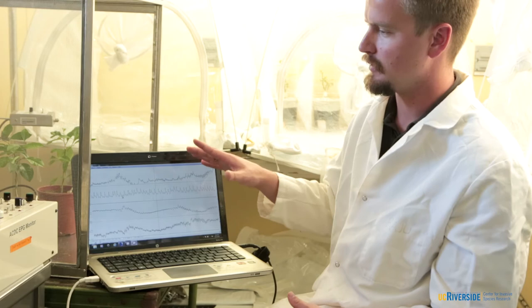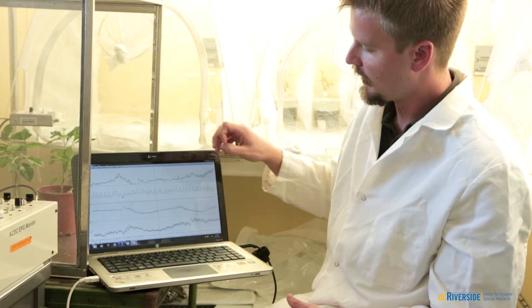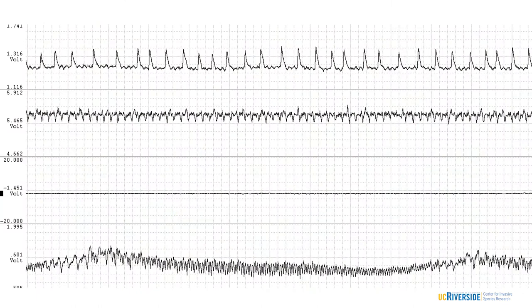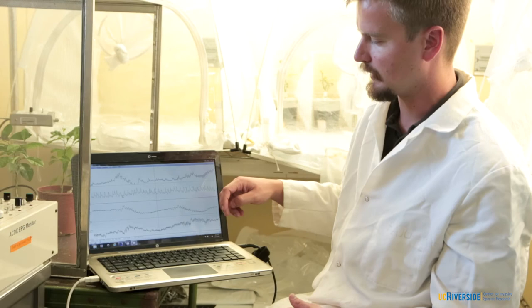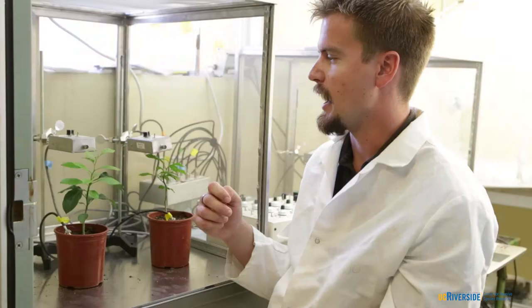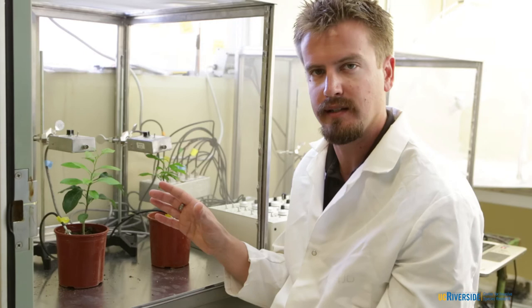So once we've hooked up the Asian citrus psyllid and made it part of the circuit in the electrical penetration graph system or the EPG, this is the readout we get on the screen. So these are waveforms that have been collected from the psyllids that have been feeding during a set amount of time. And you can see here there's some different patterns that are formed. And I can then go back through and interpret those and I can see whether or not the insect actually made it to the phloem, how long it was in the phloem, or from whatever other types of tissues the insect may have been feeding from during that time.